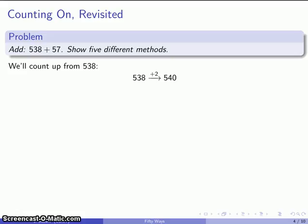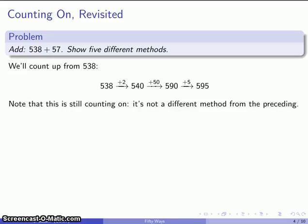540, and then maybe up another 50, to 590, and again here I have 2 and 50, that's 52, I need 5 more to get to my final answer. And again, this is still counting on, so this does not really count as a different method, it's just being done in a different way.